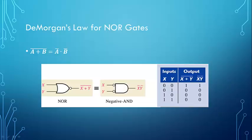Similarly, for our NOR gates, De Morgan's Law tells us that A NORed with B is not equal to A-NOT ORed with B-NOT, but rather A NORed with B is equal to A-NOT ANDed with B-NOT. Our NOR is equivalent to a negative AND. In our truth table, the first column represents our NOR output as we learned it, and we see that if we invert our inputs and AND them together, we get an equivalent relationship.